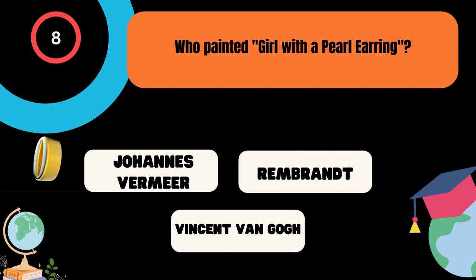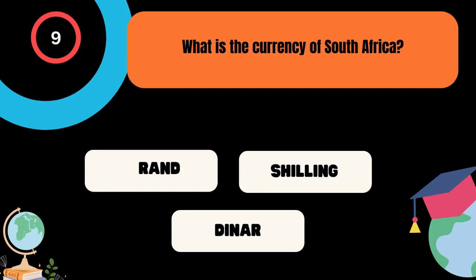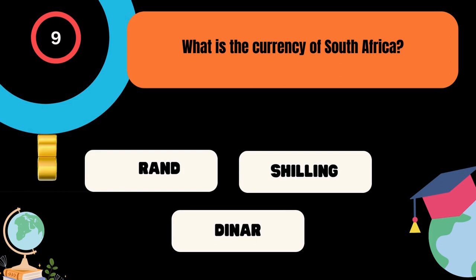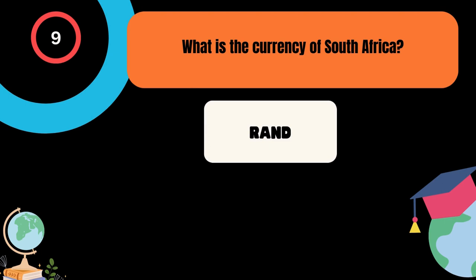What is the currency of South Africa? A. Rand, B. Schilling, C. Dinar. And the correct answer is Rand.